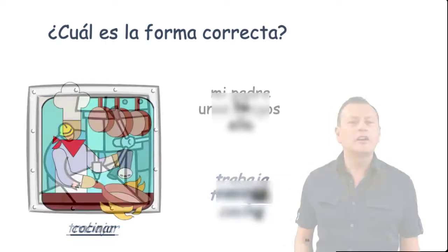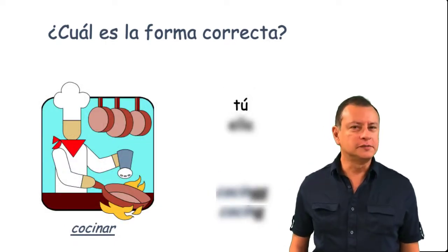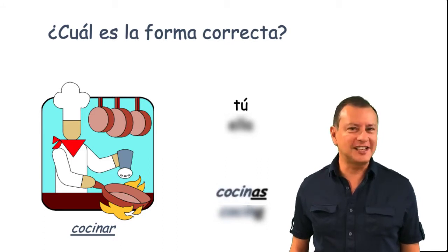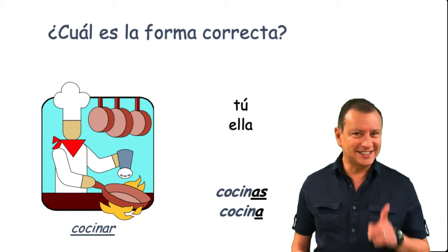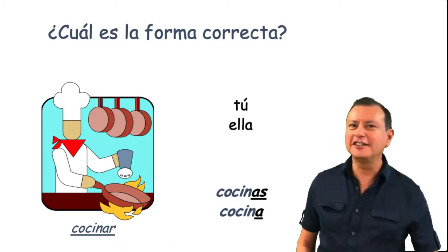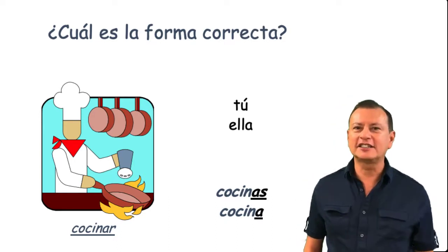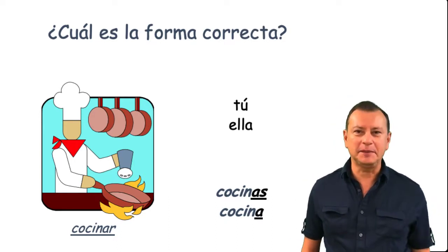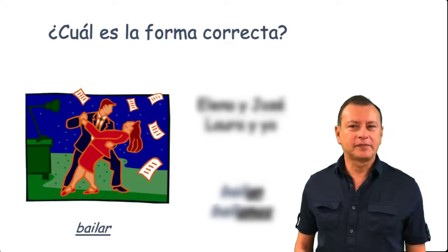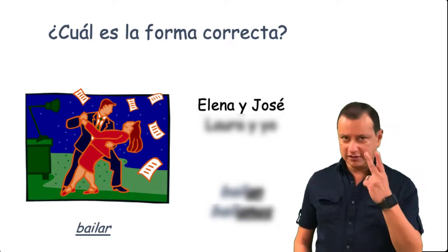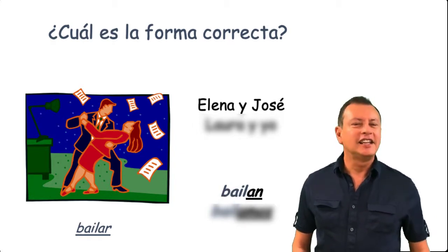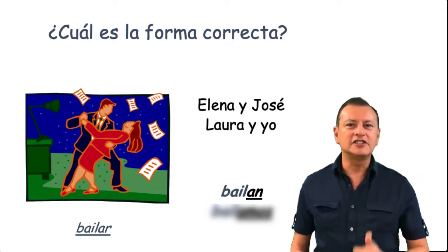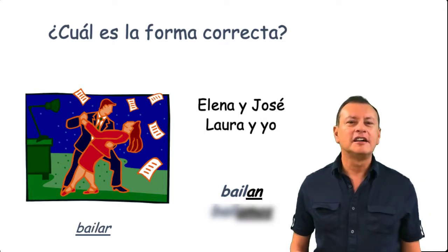Let's try a few more. Cocinar: tú — cocinas. Ella — cocina. You're doing a great job. Let's continue — you'll see how easy this conjugation can be. Bailar: Elena y José — it's a group of two so we refer to them as they — bailan. Laura y yo — that's us, nosotros — bailamos.